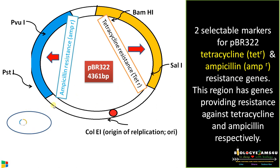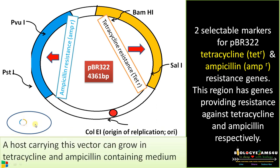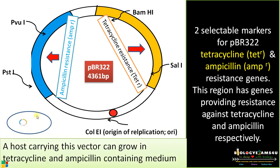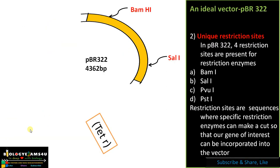To make it more clear: if we have a bacterium and we transform it with this vector, then this bacterium will have both sequences. Therefore, this host bacterium carrying this vector can grow in both ampicillin and tetracycline containing medium.